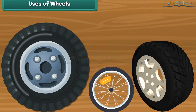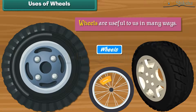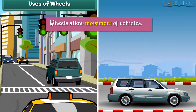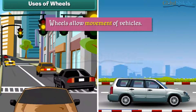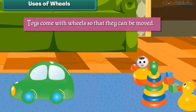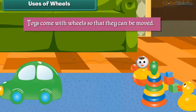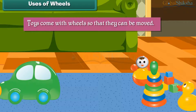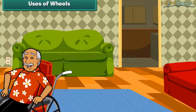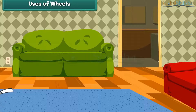Uses of wheels. Wheels are useful to us in many ways. Wheels allow movement of vehicles. Toys come with wheels so that they can be moved. A wheelchair enables movement of a disabled person or a patient from one place to another.